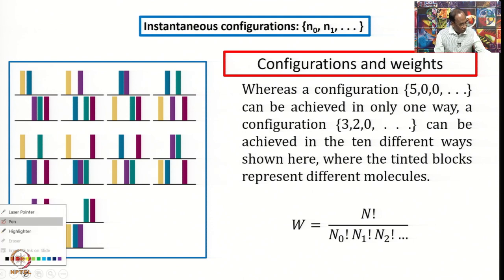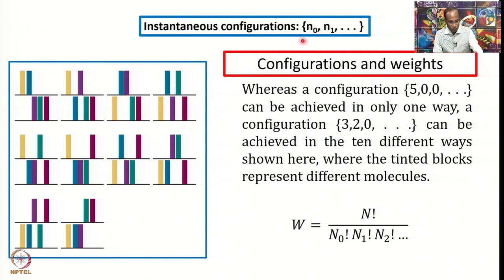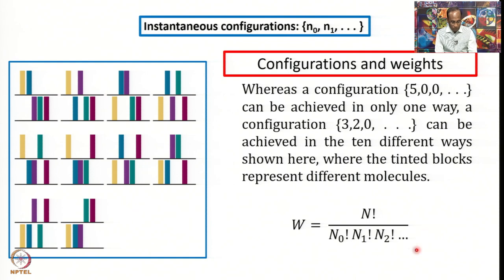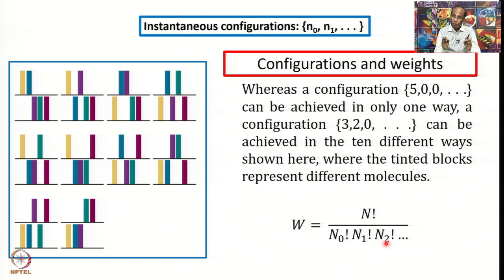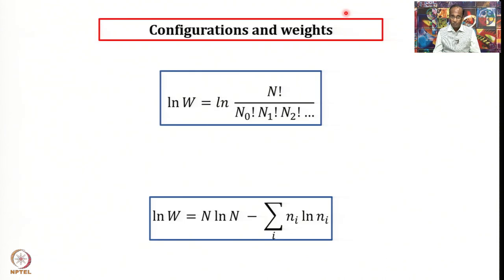When we said instantaneous configuration, we referred to this type of arrangement: N0 means N0 number of molecules in the ground state, N1 molecules in the first excited state, and so on. The weight of a configuration can be given by this formula: the weight W equals N factorial divided by N0 factorial times N1 factorial and so on, where N is the total number of particles, N0 is the number in the ground state, N1 in the state corresponding to energy E1, and so on. This was a very important starting point — once you have an instantaneous configuration, several configurations are possible, meaning the number of ways those particles can be arranged can be numerous.